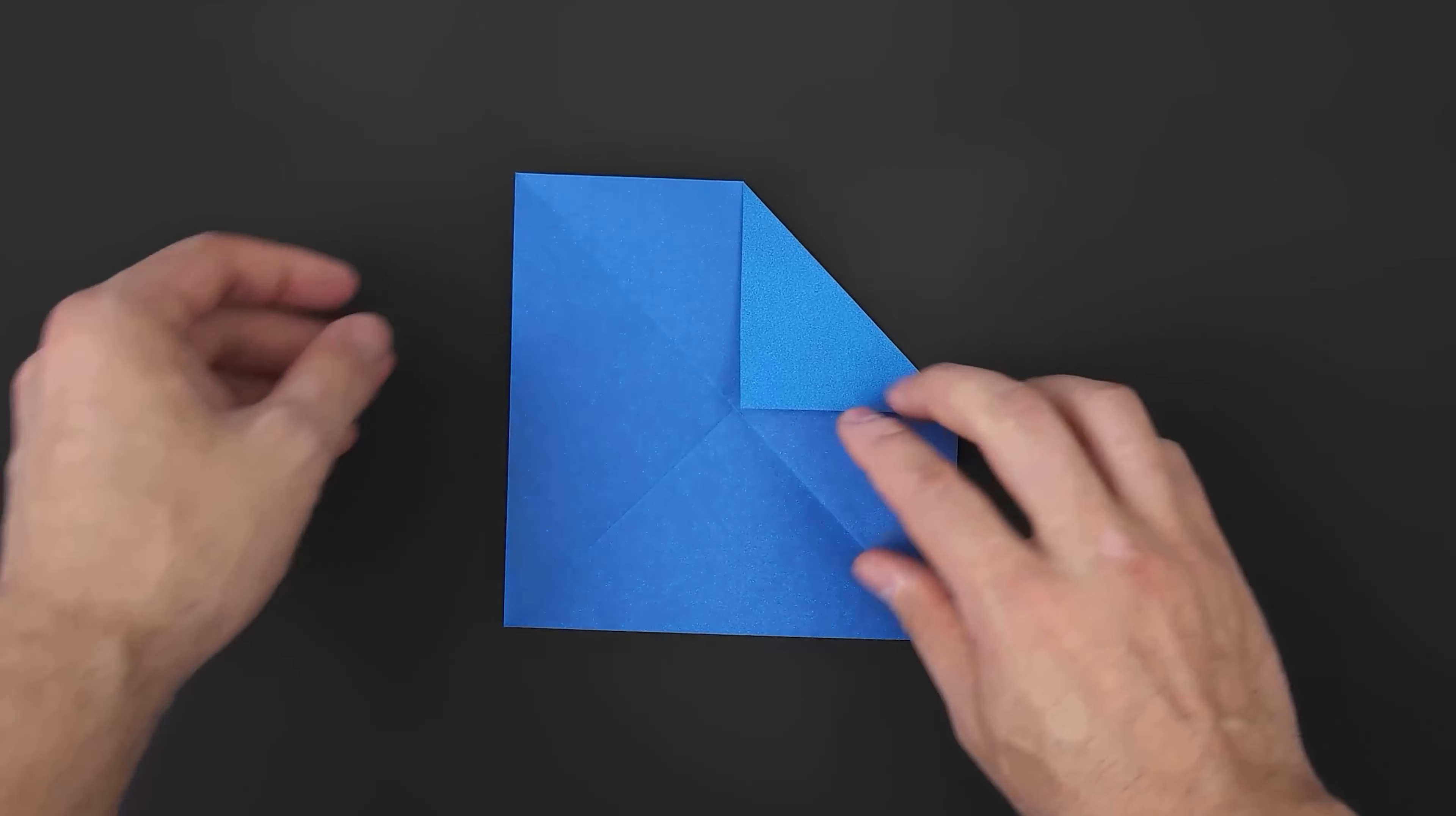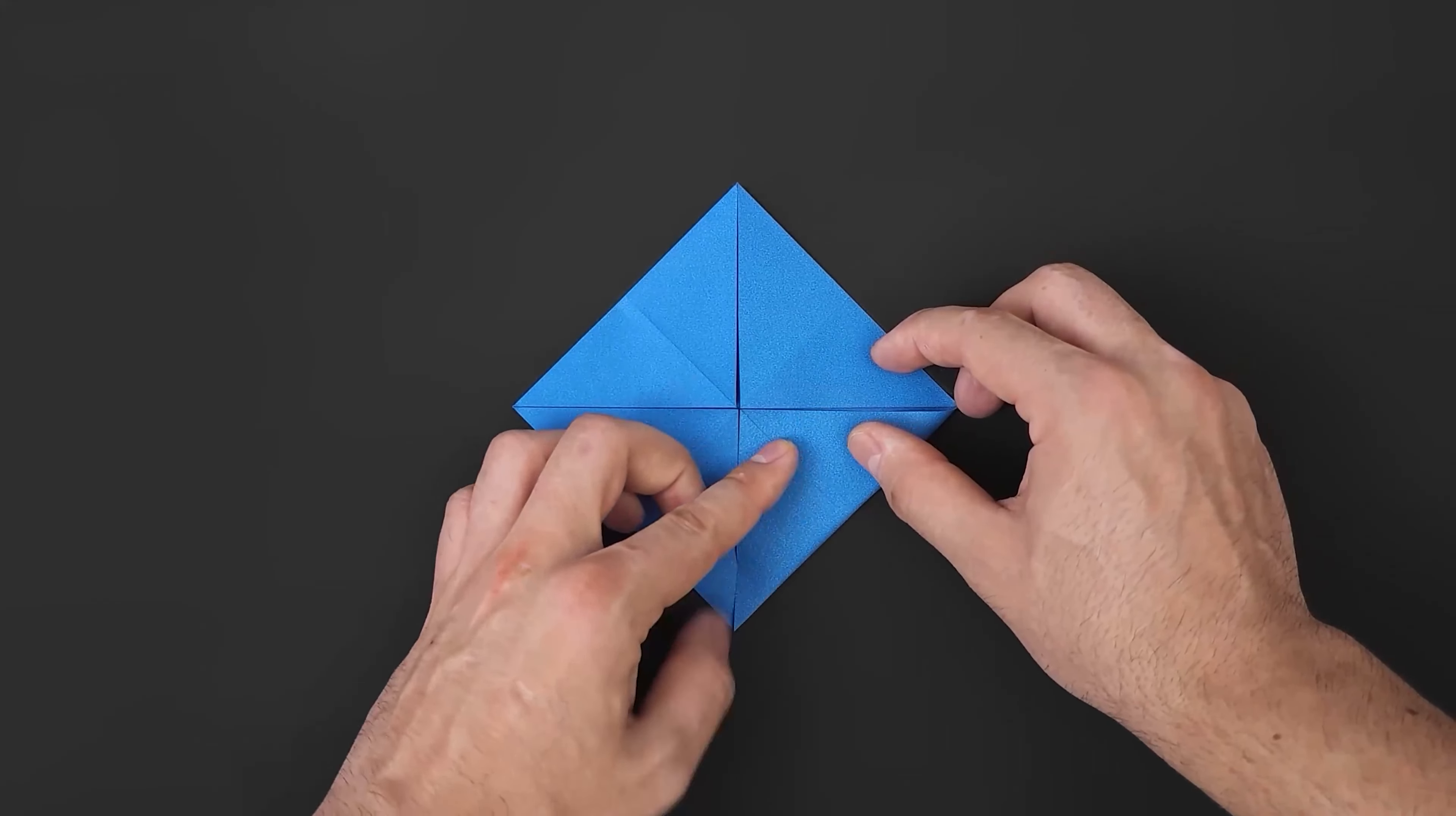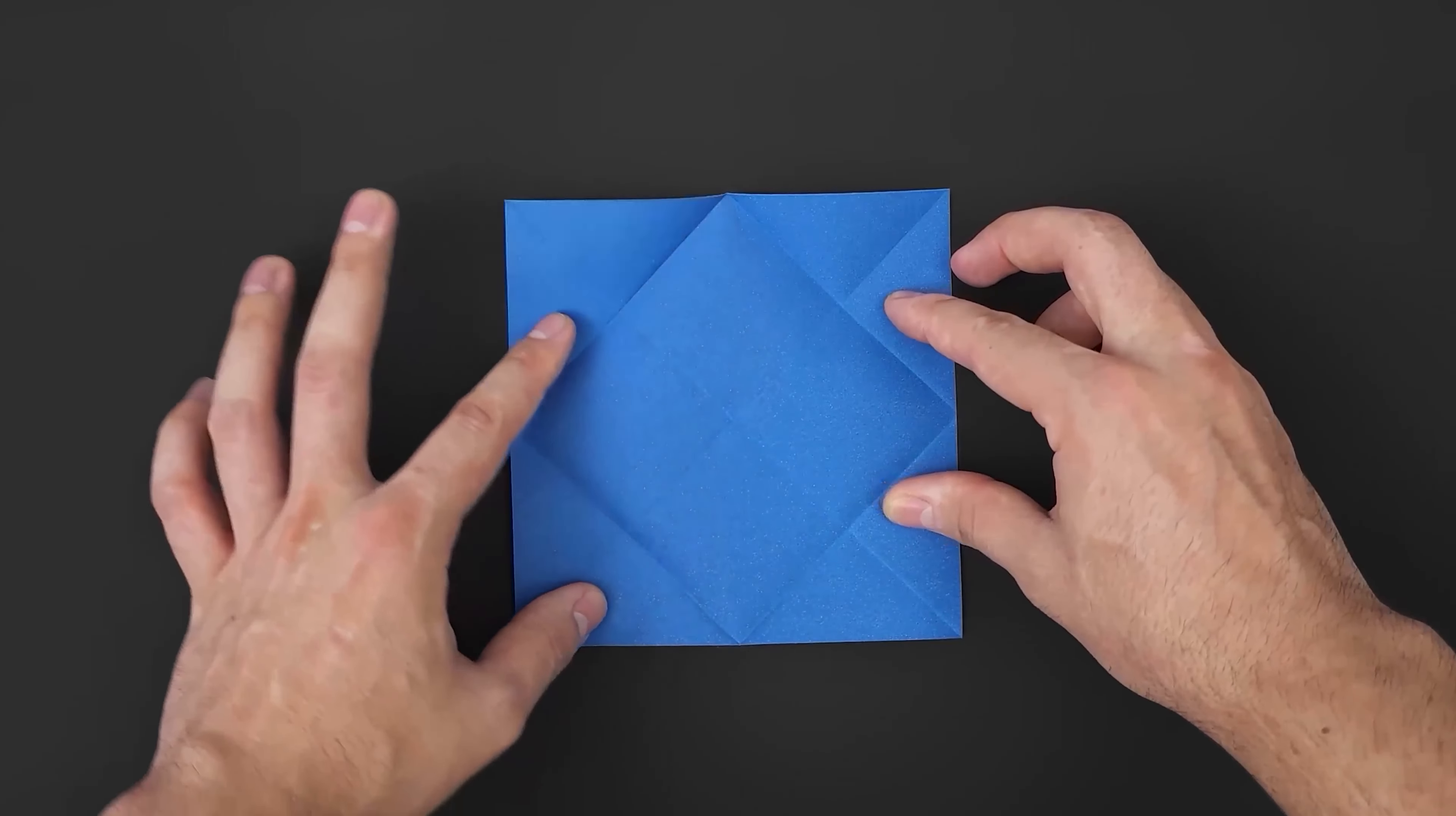Once done we'll need to bring the corners to the center. We can fold the top right corner first, and then repeat the same with the other three.